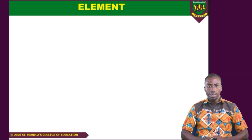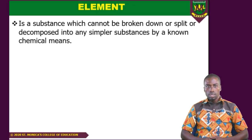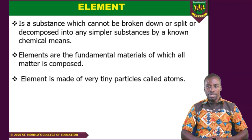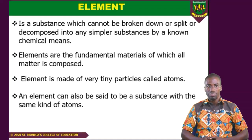So here we are starting with the element. When we say an element, what do we mean? We are saying that an element is a substance which by now we have no non-chemical means to split or decompose into simpler or smaller substances. Elements are the fundamental materials of which all matter is made up of. Now we also say that an element is made up of very tiny particles that we call atoms. Without an atom, there can't be an element. An element can also be said to be a substance which has the same kind of atoms.